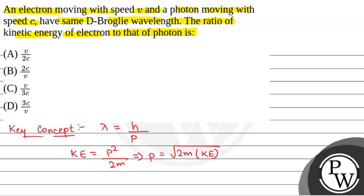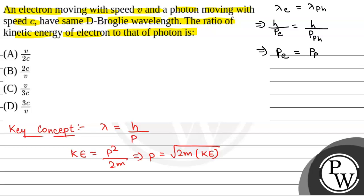Now, we have been given that the de Broglie wavelength of the electron is equal to the de Broglie wavelength of the photon. So h by momentum of electron is equal to h by momentum of photon. Therefore, momentum of electron equals momentum of photon. We can write: root over 2 times mass of electron times kinetic energy of electron equals the momentum of photon.